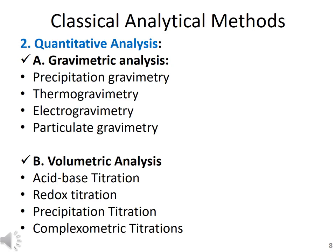The other class is volumetric analysis methods, which includes acid-base titration, redox titration, precipitation titration, and complexometric titration. You can use one or more than one of these tools to quantitate or calculate the concentration of the analyte in a given sample.